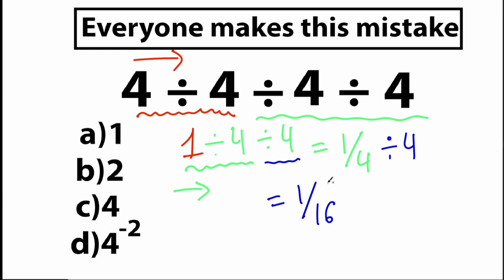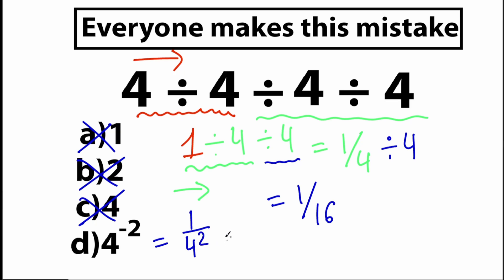Now let's check the options. Option A is 1 — not the same. Option B is 2 — not the same. Option C is 4 — not the same. What about option D? We have 4 to the power of minus 2. That equals 1 over 4 squared, which is 1 over 16. That is exactly the same as our answer, so option D is correct.